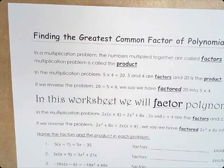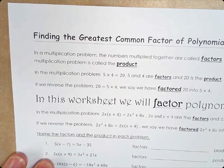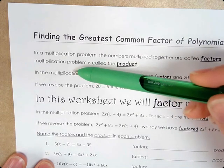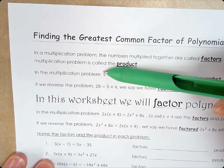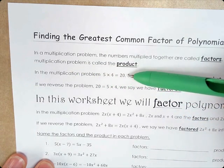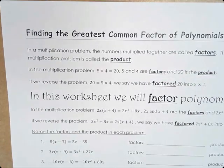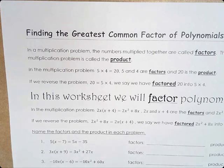In a multiplication problem, the numbers multiplied together are called factors. The answer to a multiplication problem is called the product. In the multiplication problem 5 times 4 equals 20, 5 and 4 are factors and 20 is the product. If we reverse the problem, we have 20 equals 5 times 4, and we say that we have factored 20 into 5 times 4.